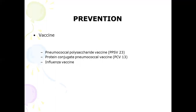To prevent pneumonia, vaccination is one of the key methods. Vulnerable patients — those with structural lung disease, other lung diseases, or who are immunocompromised — can be protected against Streptococcus pneumoniae using the pneumococcal polysaccharide vaccine or the protein conjugate pneumococcal vaccine. Influenza vaccine can also be given so that the patient will develop pneumonia less frequently. That is all for today. Thank you.